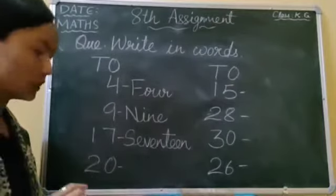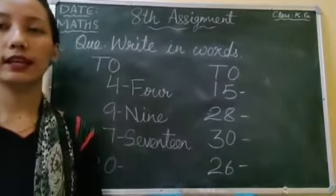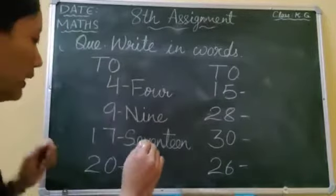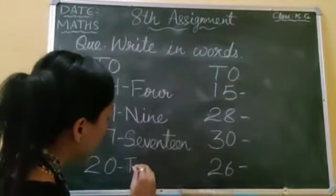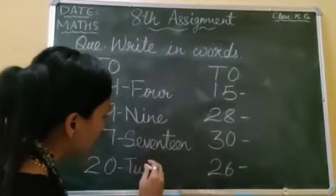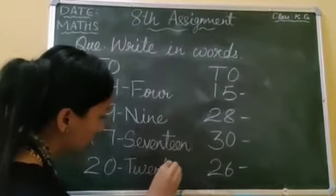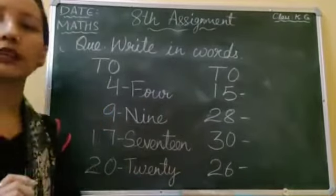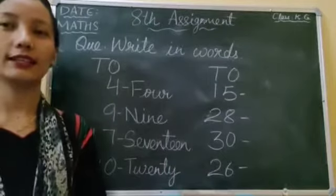Next, 20. What is the spelling of 20? T-W-E-N-T-Y. Twenty.